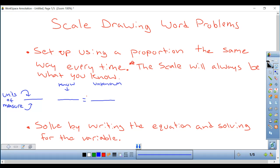So hopefully this should be kind of like a review of two different units, but it's also much simpler. There's not nearly as many things to remember. So without further ado, we're going to get started with scale drawing word problems. The first thing we're going to do is set up using a proportion and we're going to solve it the same way. We're going to set it up the same way every time. In these problems you'll be given a scale and the scale will always be what you know. So that's always going to go in this middle problem right here, the scale. On the left side we're going to put our units of measure and on the right side our unknown. And we're going to solve by writing the equation and solving for the variable.